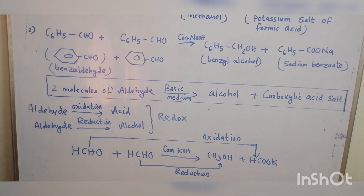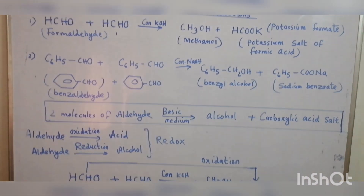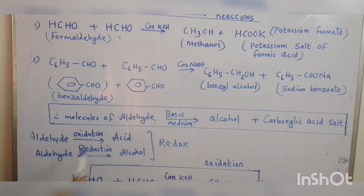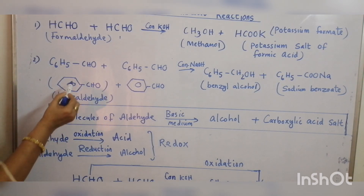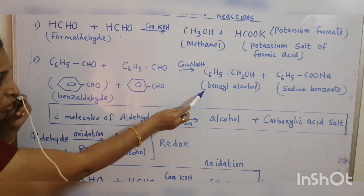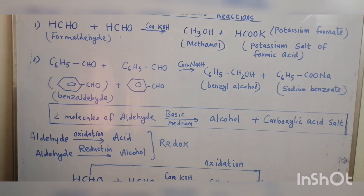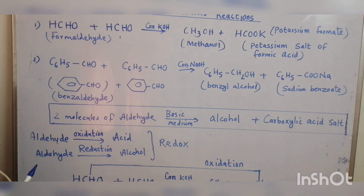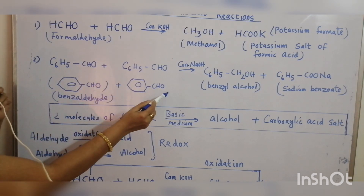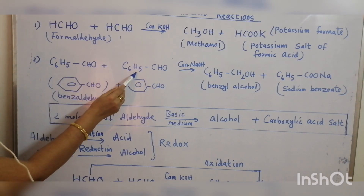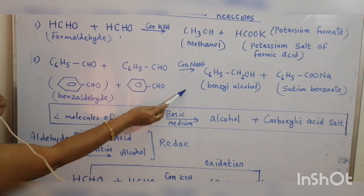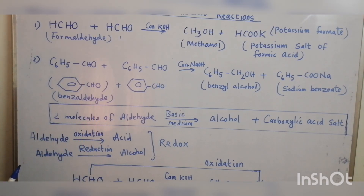Now see how benzaldehyde reacts. Two molecules of benzaldehyde react with concentrated sodium hydroxide to give benzyl alcohol and sodium benzoate. One molecule of benzaldehyde undergoes reduction to form benzyl alcohol, and the other is oxidized to sodium benzoate — the sodium salt of benzoic acid. This is therefore a redox and disproportionation reaction.